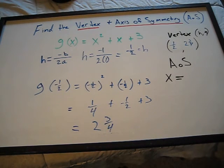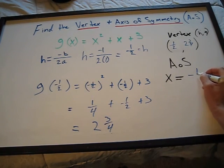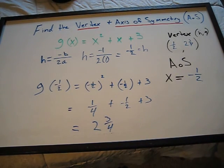Our axis of symmetry will be x equals negative 1 half. And that is how you find the vertex and the axis of symmetry.